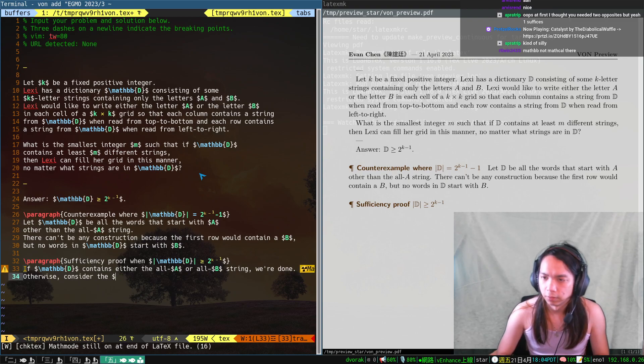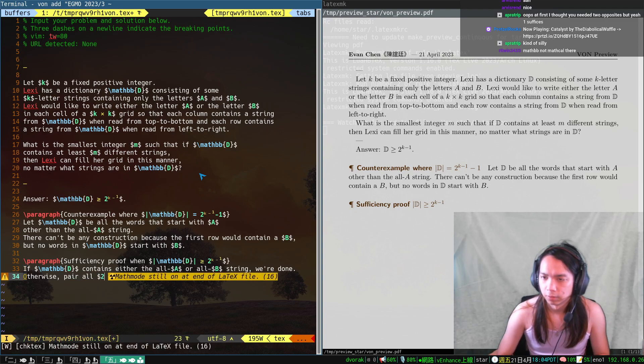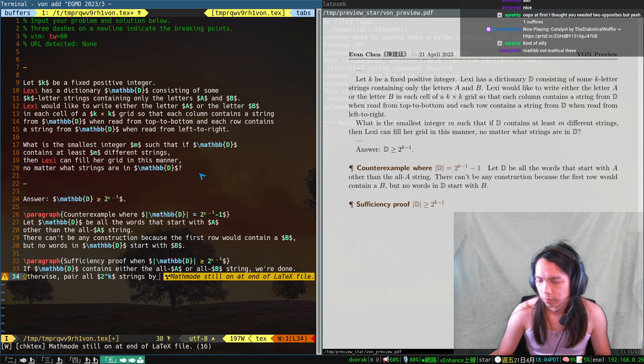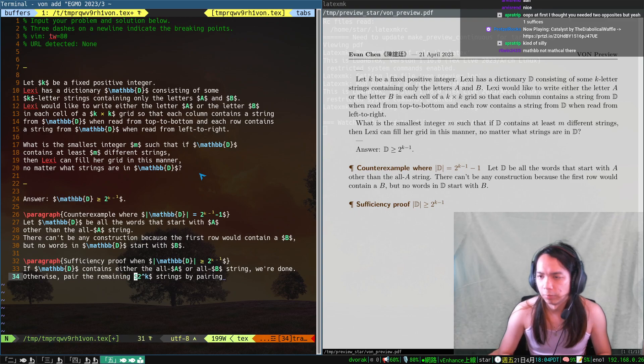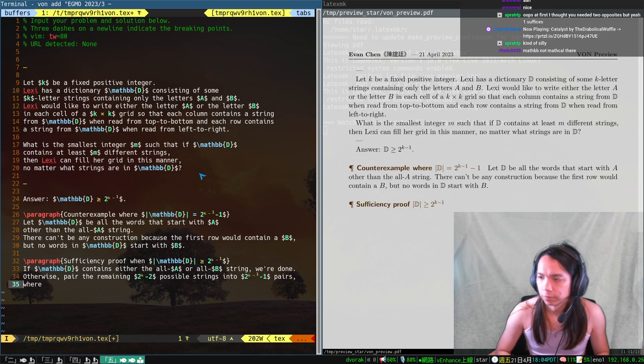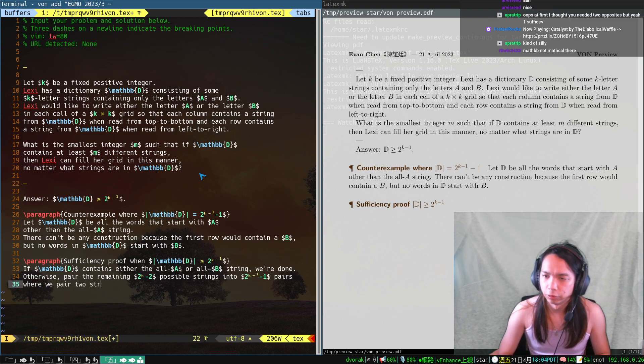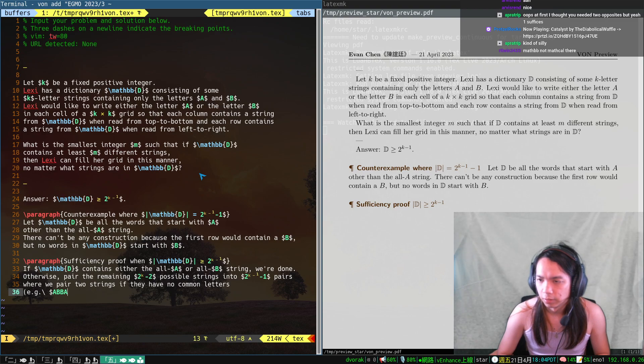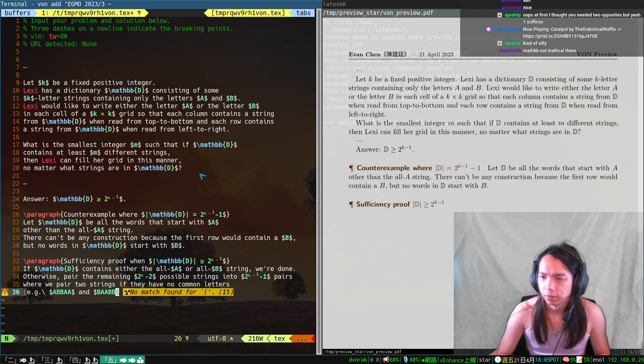Otherwise, consider the 2 to the k—ha! By pairing—so pair the remaining 2 to the k minus 2 possible strings into 2 to the k minus 1 minus 1 pairs, where we pair two strings but they have no common letters. E.g., ABB, BAA.